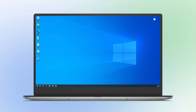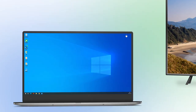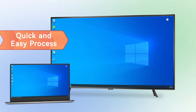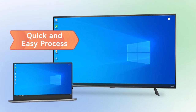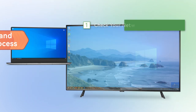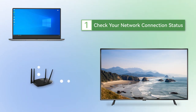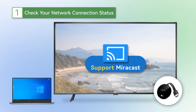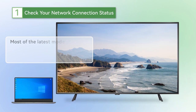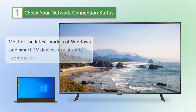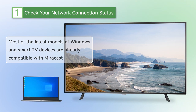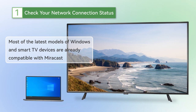One of the simplest ways to project your Windows PC to TV is using a wireless method called Miracast. It allows you to instantly cast the PC display onto your TV with a quick and easy process. First of all, you should check that a Wi-Fi router is connected to both your computer and TV and that your TV supports Miracast or has a Miracast adapter. Most of the latest models of Windows and Smart TV devices are already compatible with Miracast, so you wouldn't have to worry about finding another route for screen mirroring.